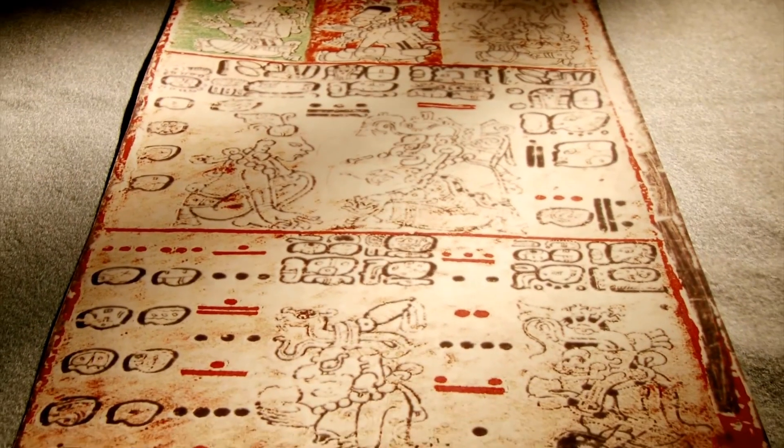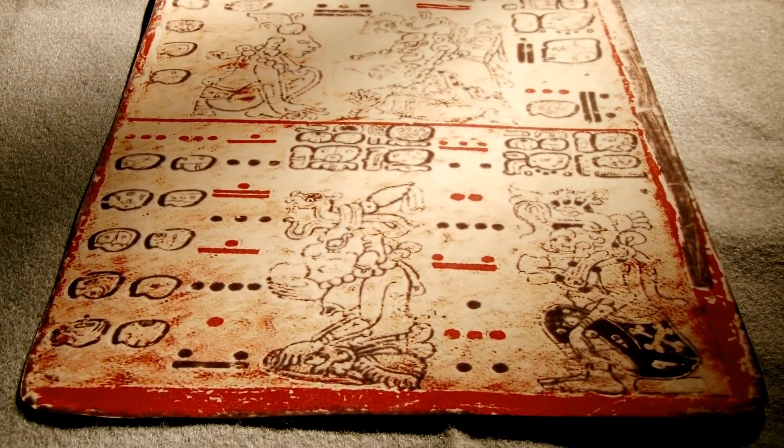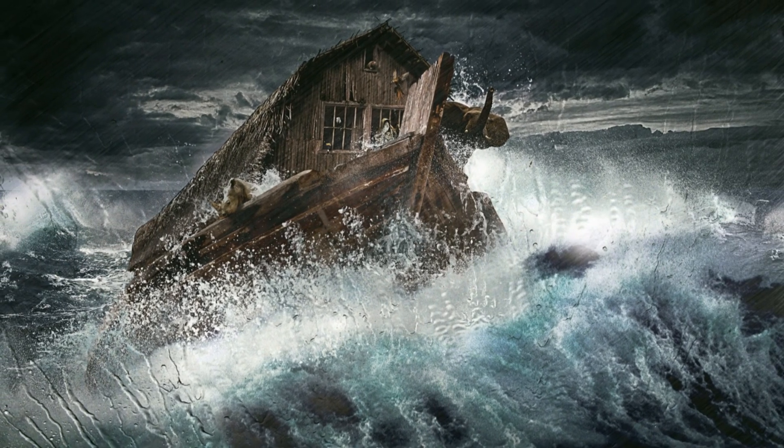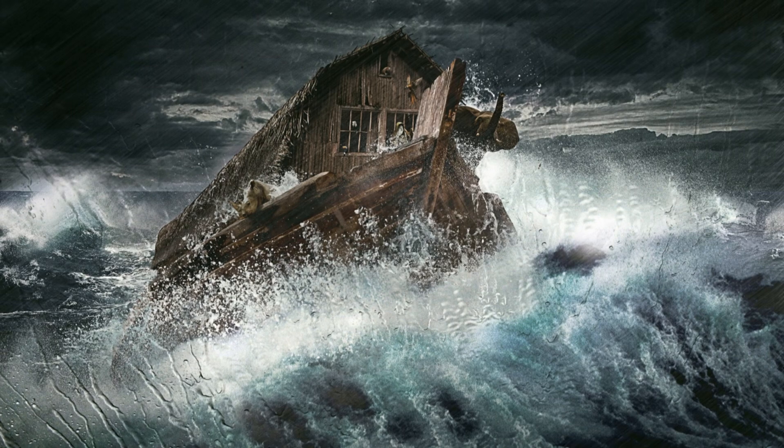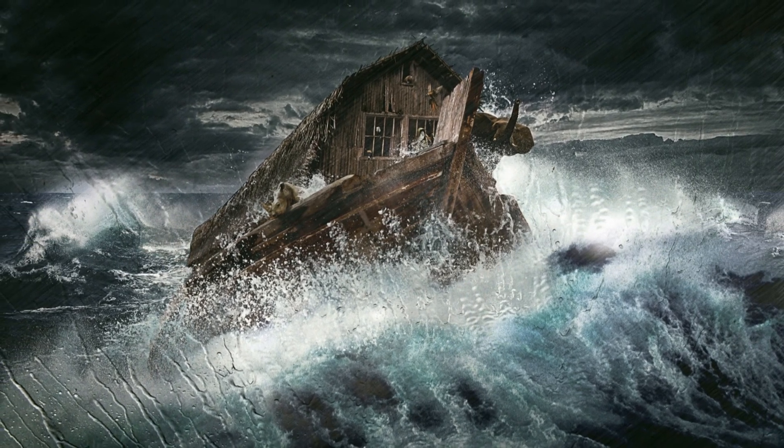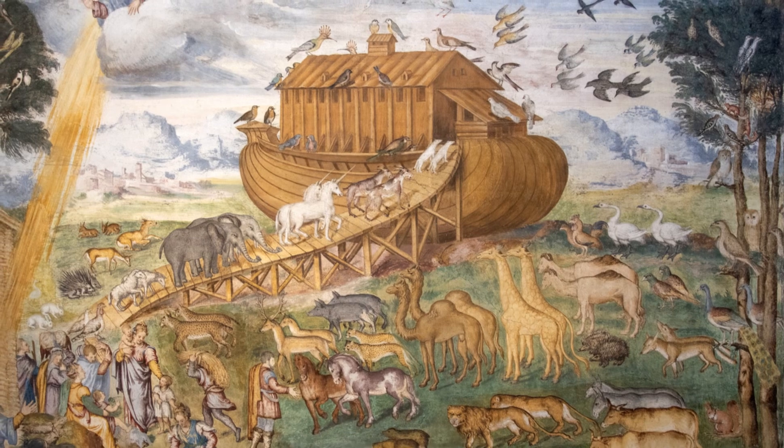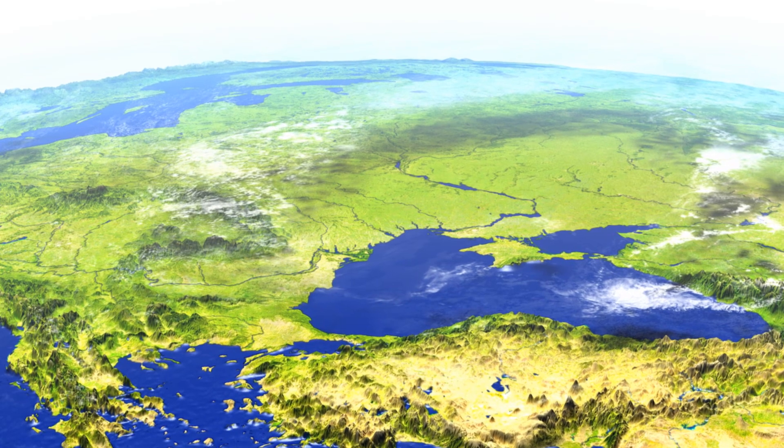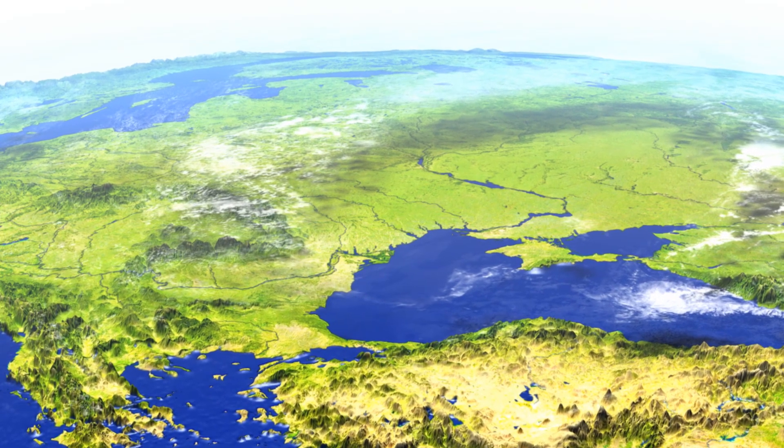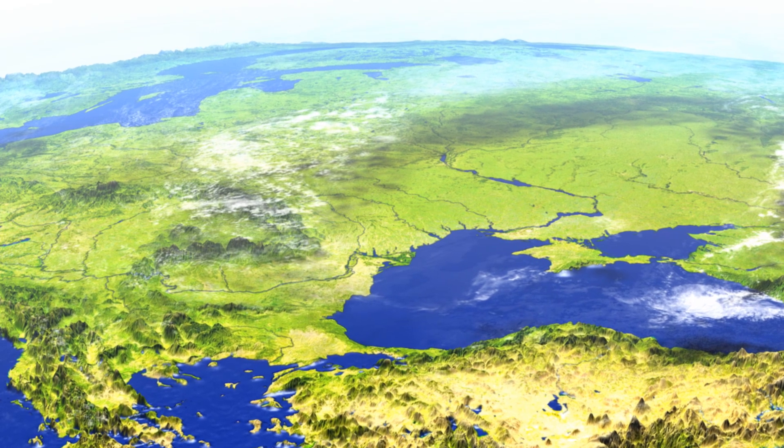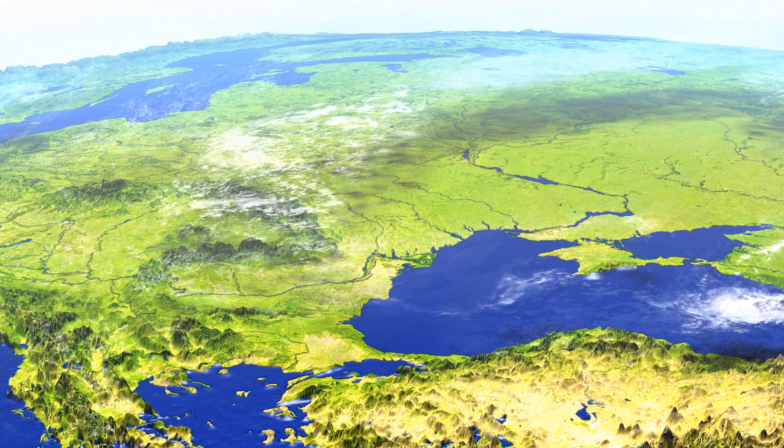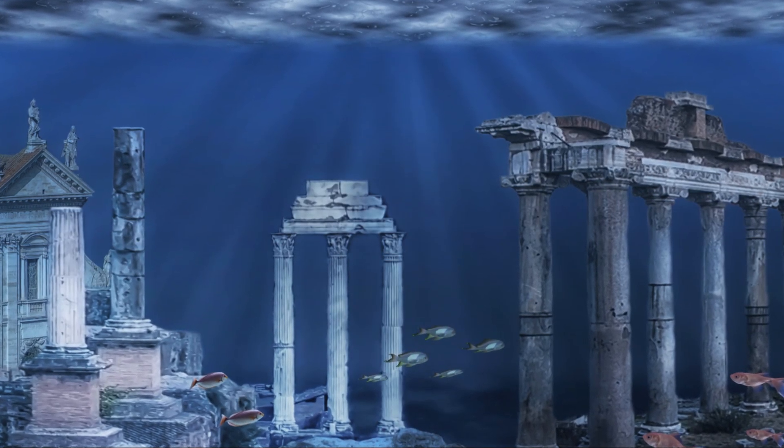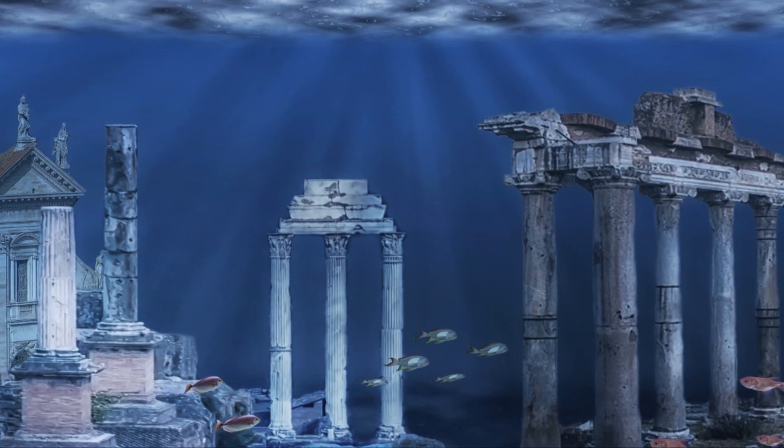Across cultures and continents, ancient myths whisper of global cataclysms that reshaped the world. From the biblical flood to the sinking of Atlantis, these stories, often dismissed as mere folklore, bear striking similarities to scientific evidence of past catastrophic events. Consider the story of Noah's Ark, a tale of a great flood that submerged the world. While the literal interpretation remains contested, geological evidence suggests that a massive flood inundated the Black Sea region around 5600 BC, potentially inspiring this enduring myth. This catastrophic event caused by rising sea levels would have had a profound impact on early civilizations, leaving an indelible mark on their collective memory.